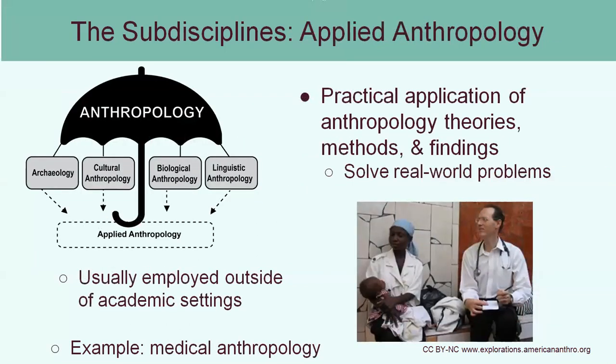There is a sub-discipline called applied anthropology. The idea of applied anthropology is that you're combining all the other four sub-disciplines — the archaeology, the cultural anthropology, the biological anthropology, the linguistic anthropology — and applying it to a specific situation to help solve real world problems. One idea of that would be something like medical anthropology, where we look at how your culture and your evolutionary background all influence the health of today's society.